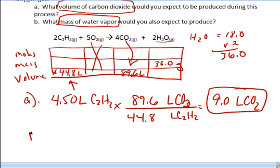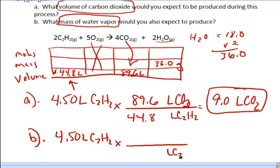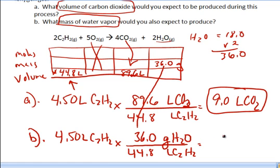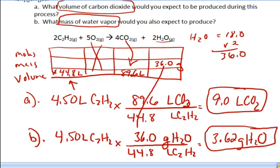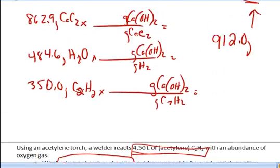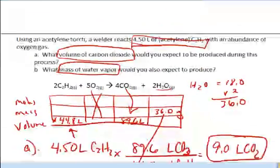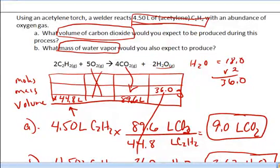And the next question says what mass of water vapor would you expect to produce? So I'm going to start with 4.50 liters of C2H2. On the bottom, I'm going to put liters of C2H2. On top, I'm going to put grams of H2O. And then I'm going to write 36 because that goes from my table right there. And on the bottom, I'm going to put 44.8 liters. I'm going to do the math out and end up with about 3.62 grams of H2O. So basic stoichiometry, use the information in your table. You'll be given one number, either in a problem or in a graph, that you can start with and then just go from there. They're all connected. Everything in that table is interchangeable. It's all related. It all has an underlying relationship.